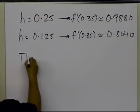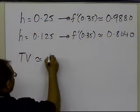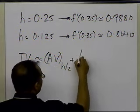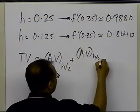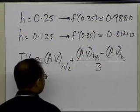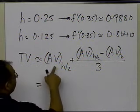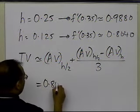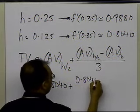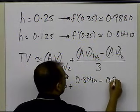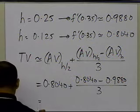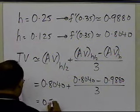Using the Richardson extrapolation formula derived previously: take the approximate value using half the step size, plus the approximate value using half the step size minus the approximate value using the step size h, all divided by 3. So that's 0.8040 + (0.8040 − 0.9880) / 3, and this turns out to be 0.7427.